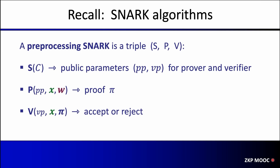To begin with, I want to quickly review the three algorithms that make up a SNARK. A preprocessing SNARK is a triple of algorithms S, P, and V. The setup algorithm will take a circuit and preprocess it to output public parameters for the prover and public parameters for the verifier. The proving algorithm will use the prover parameters, the statement X, and the witness W to produce a proof pi. The verifier will use the verifier parameters, the statement X, and the proof pi to decide whether to accept or reject the proof.